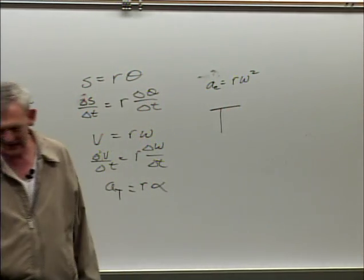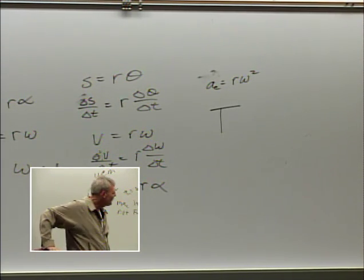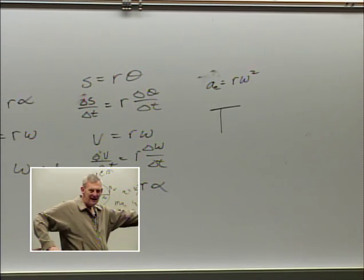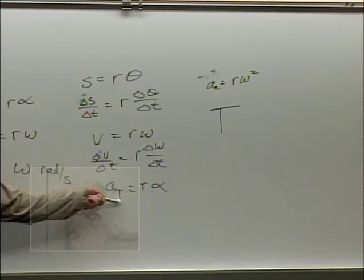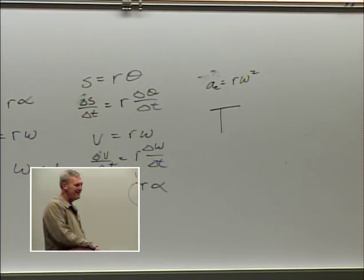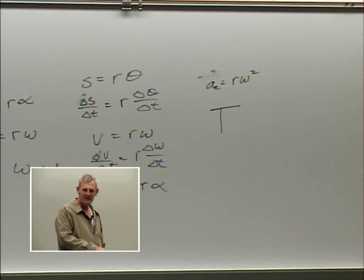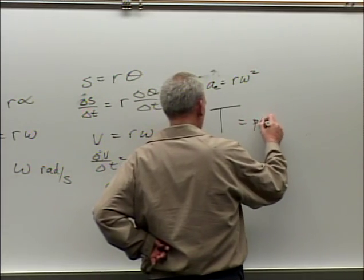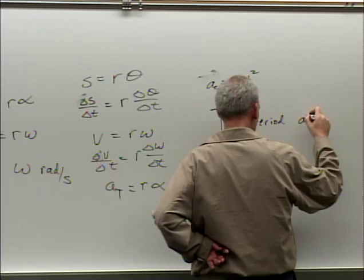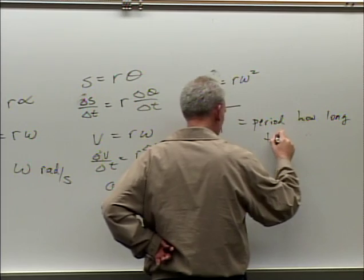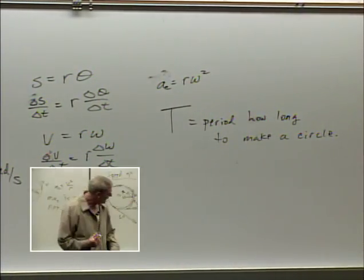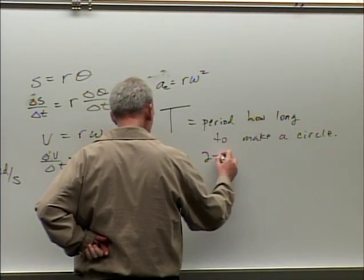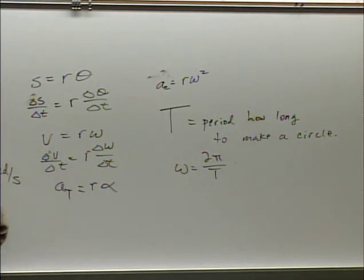What does capital T stand for when going around a circle? The period. But T has also stood for tension and temperature — you need to know which one we're talking about. T is the period: how long it takes to complete one full circle.